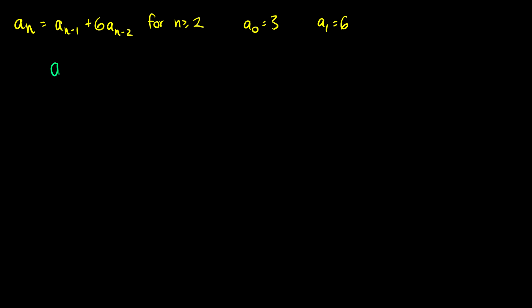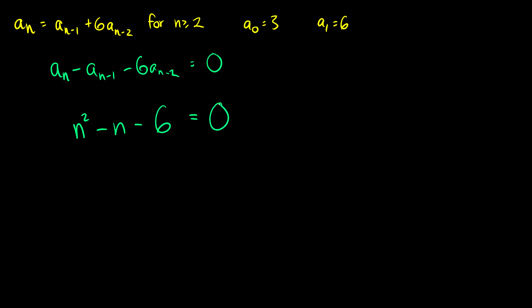First we should bring everything to one side and make it equal to zero: a_n minus a_{n-1} minus 6·a_{n-2} = 0. Our second step is to find the characteristic equation, which is r² minus r minus 6 = 0. We can factor this to get (r − 3)(r + 2) = 0.